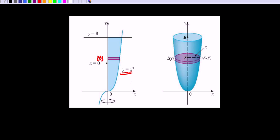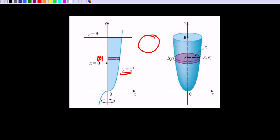Delta y suggests our equations should be written in terms of y — that is, x equals some function of y — because we are writing the integral in terms of y. When we rotate this slice it becomes a sample cross-section disk. This part is the radius of the disk, and that should be written as a function of y.